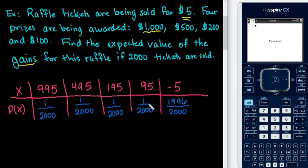The probabilities came from the likelihood of it happening. Since there are 2,000 tickets that are sold, only one person will win the 1,000. So that's where the 1 in 2,000 came from. The 1996 came from the fact that since there are four prizes awarded, only four people are going to win. And that means that 1,996 people are not going to win. So that's where this probability came from.